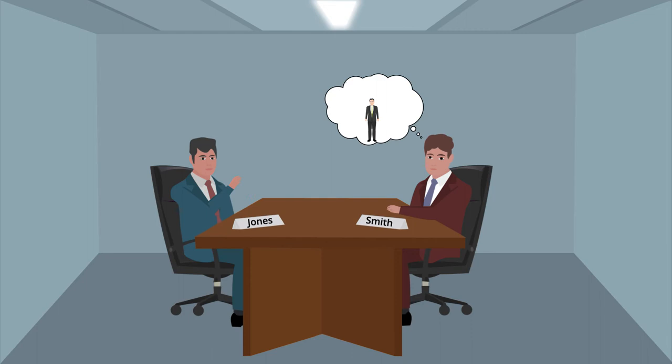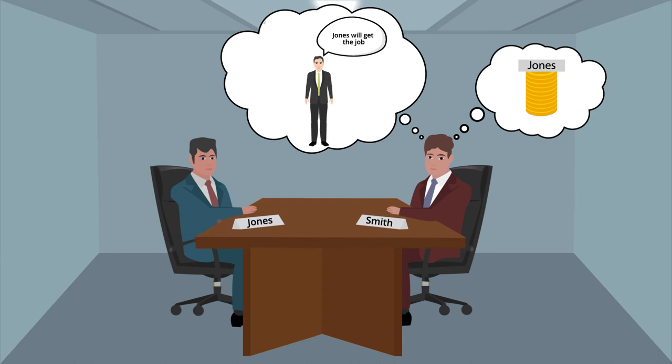The most well-known case is about two men who are applying for a job, Jones and Smith. Smith has been assured that Jones will get the job by the company president, and he has counted that Jones has 10 coins in his pocket. He concludes that the man who will get the job has 10 coins in his pocket.